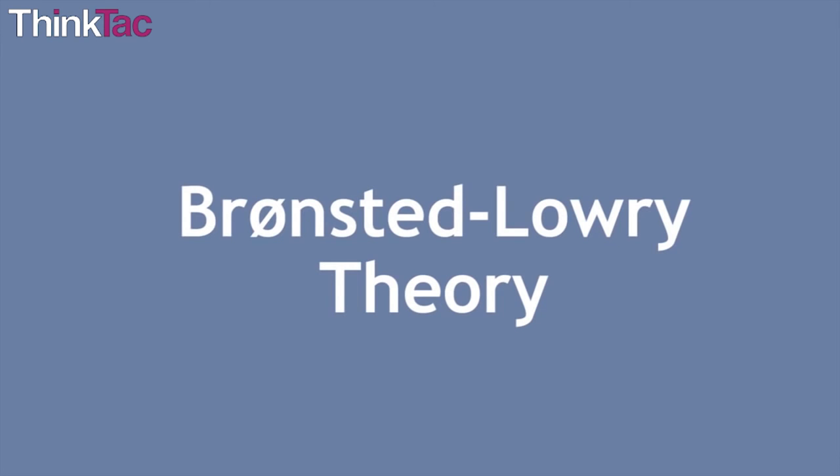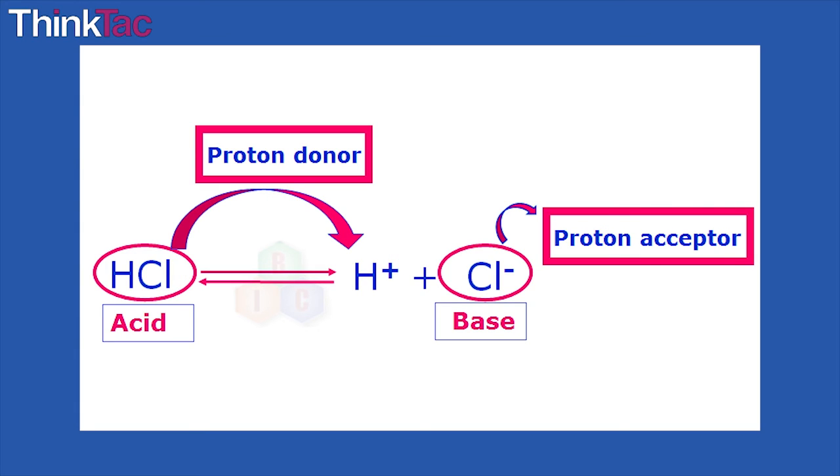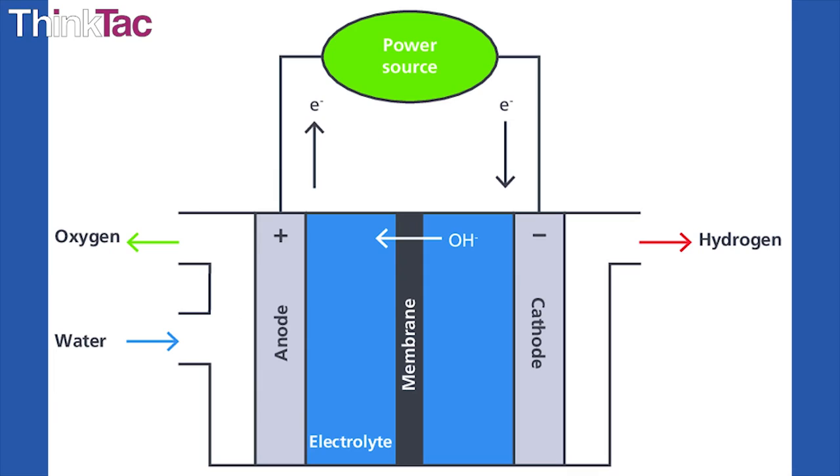The Bronsted-Lowry theory. According to this theory, an acid is a proton donor and a base is a proton acceptor. An electrolyzer is a vessel with an electrolyte in which electrodes, a cathode and an anode, have been placed. The cathode is connected to the negative pole and the anode is connected to the positive pole.